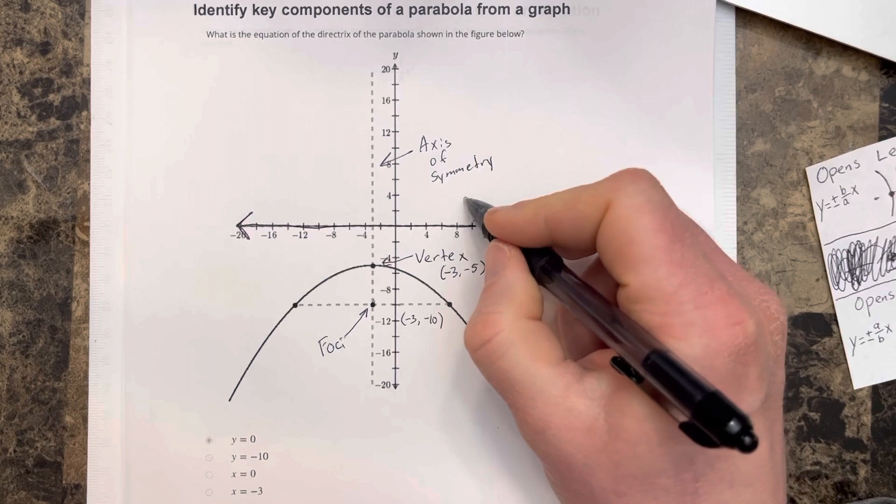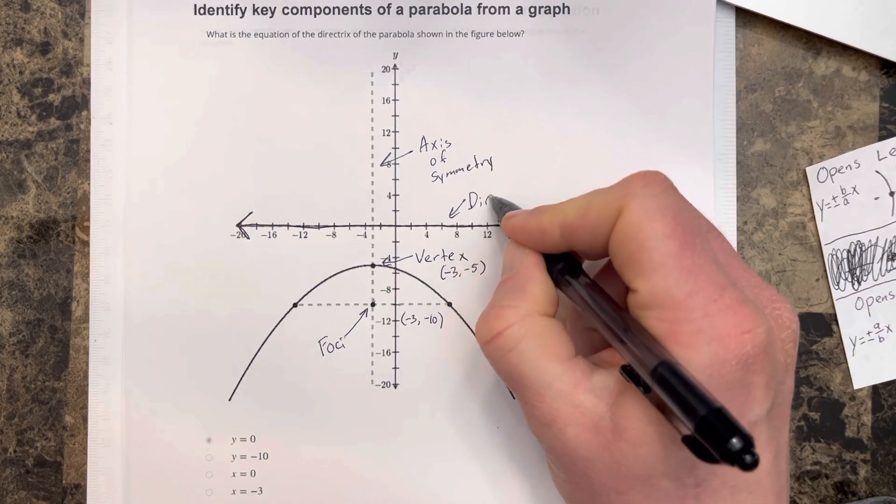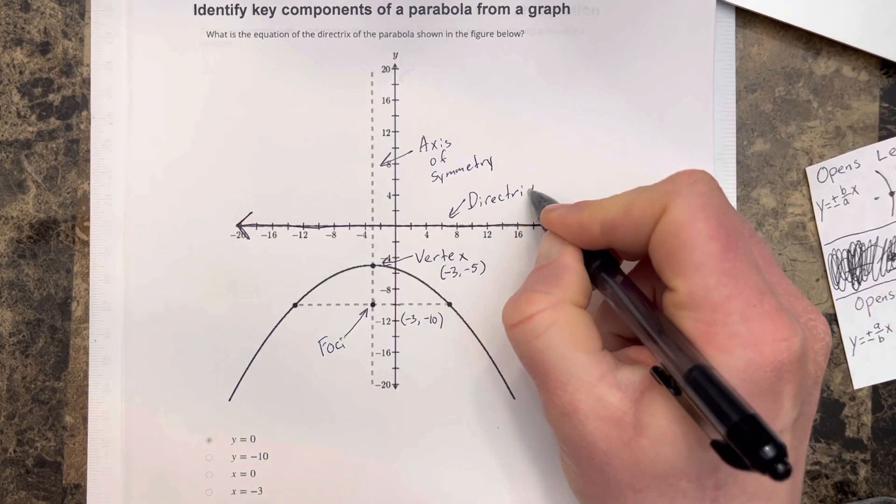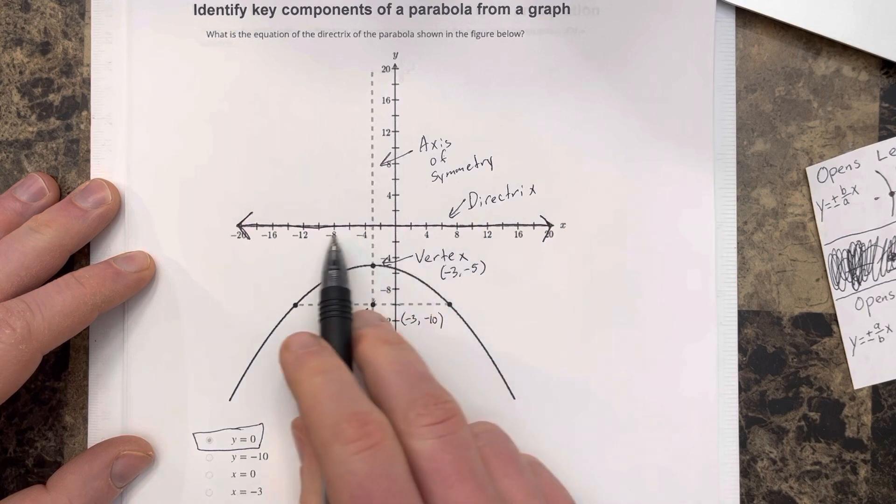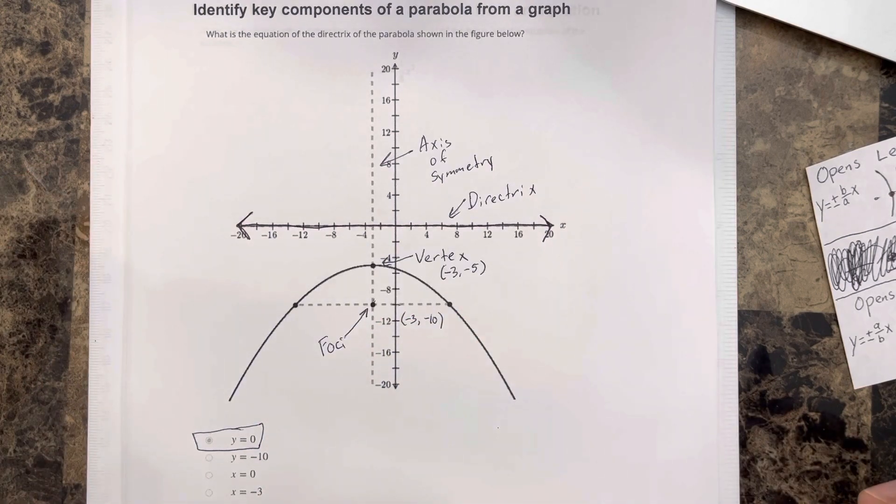We've got the axis of symmetry here. This is the directrix. The directrix for this problem is y equals 0, which is a horizontal line at a y-value of 0.